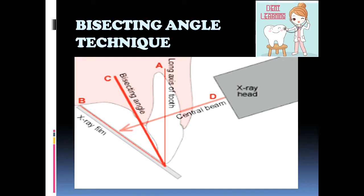Now, bisecting angle technique. Bisecting angle technique may be useful when the operator is unable to apply paralleling technique because of large rigid sensors or due to the anatomy of the patient.